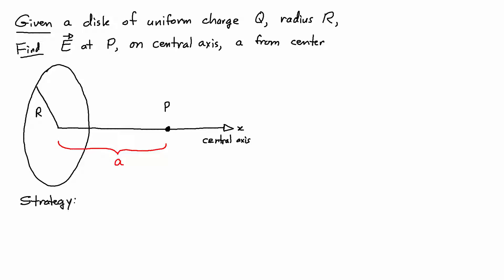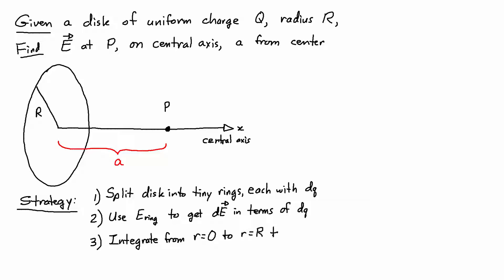And my strategy for this is to first split the disk into tiny rings, each with the small charge dq, then use the expression for the electric field of a ring to get dE in terms of dq, and finally to integrate from r equals zero at the center of the disk to r equals capital R at the edge to get the total electric field for the entire disk.